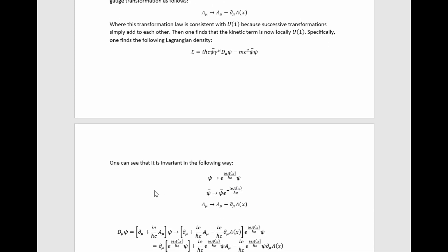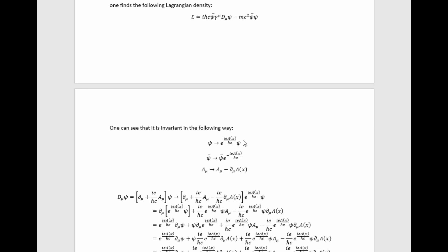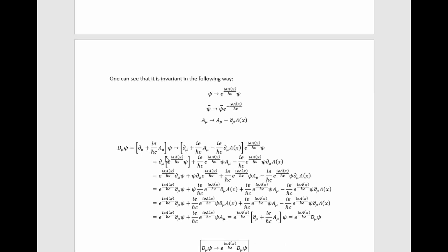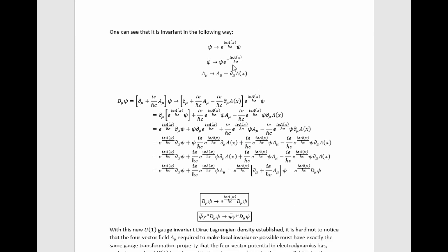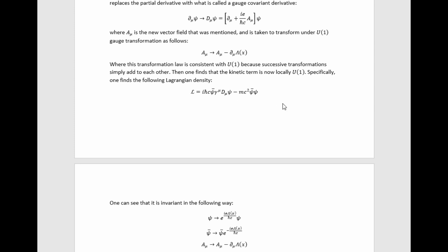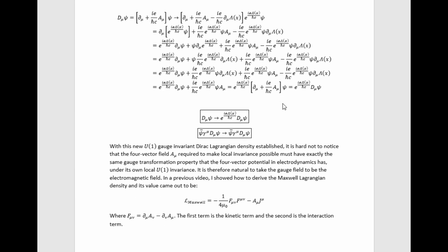One can see this simply by taking this transformation for the psi field, the Dirac field, and this transformation for the gauge field, and then plugging in the transformed versions into the gauged covariant derivatives. We see through all this algebra that I showed on the screen in detail to avoid confusion, just results in this transformation law. And because this transformation relation for psi bar follows from that, we simply have that this is actually invariant. So in fact, this little trick we did in introducing this Lagrangian does actually succeed in making it locally U1 invariant.